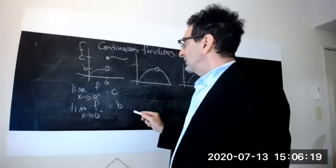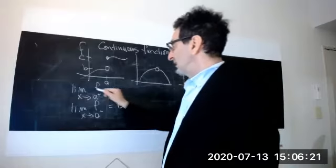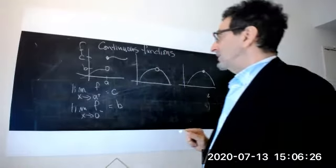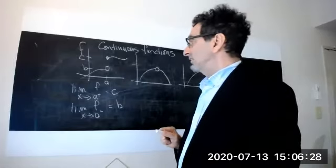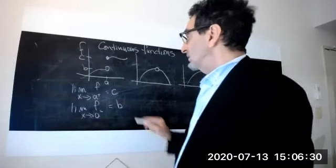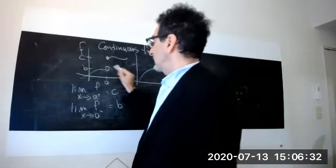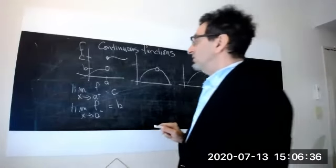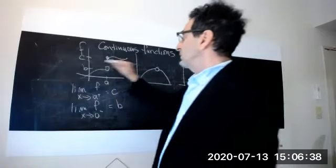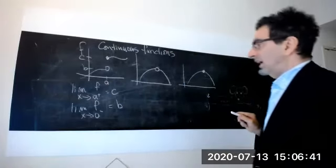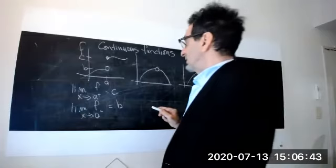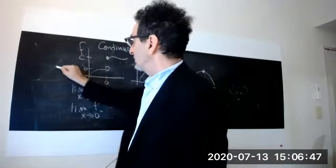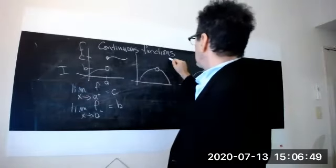So if we have that situation where the limit does not exist, then we can say the function is not going to be continuous at this point A where the limit doesn't exist. We're talking about when a function is continuous not everywhere, but just at a particular point. At this particular point A, we would say it's not continuous. That was example one. Here's example two.